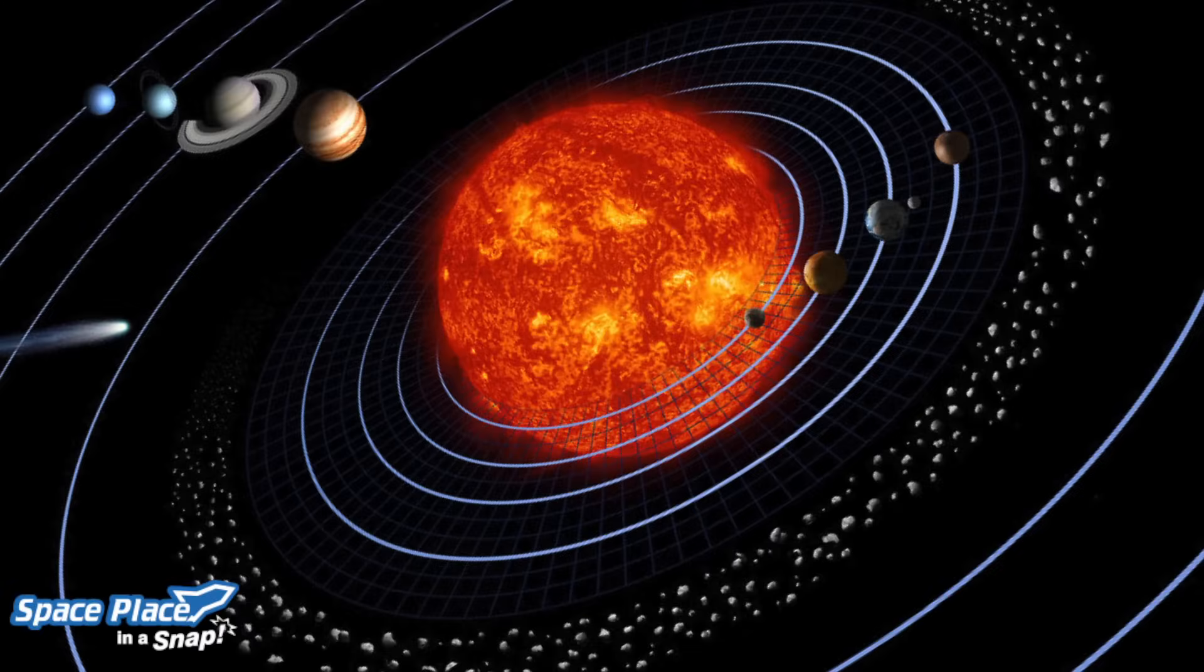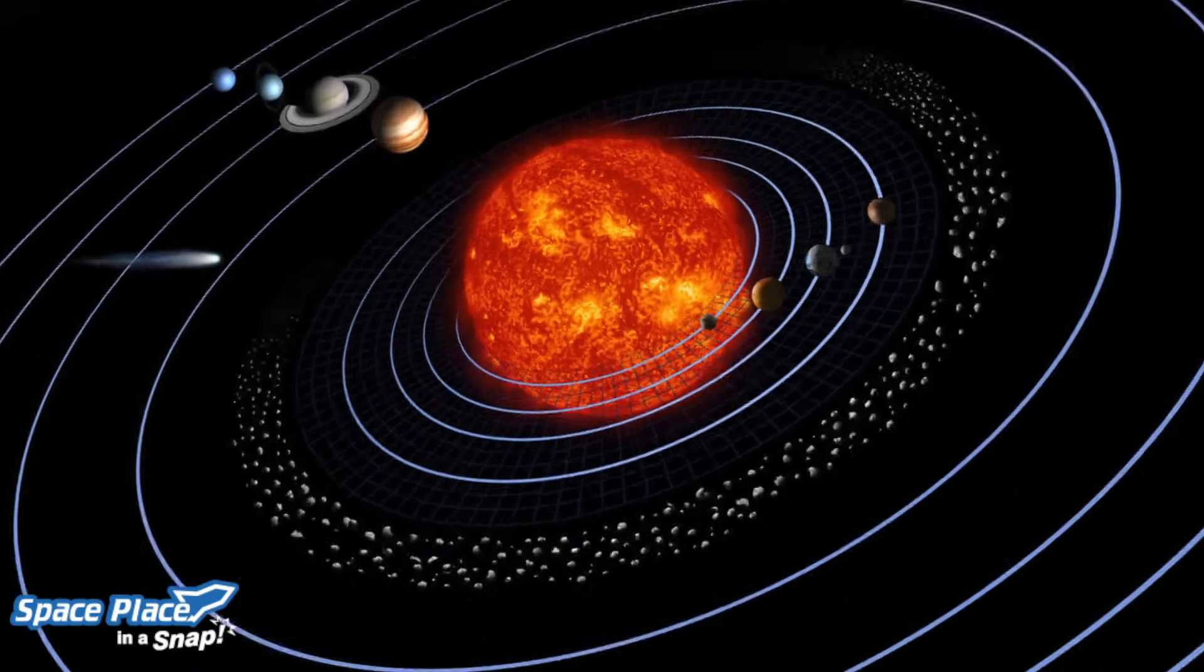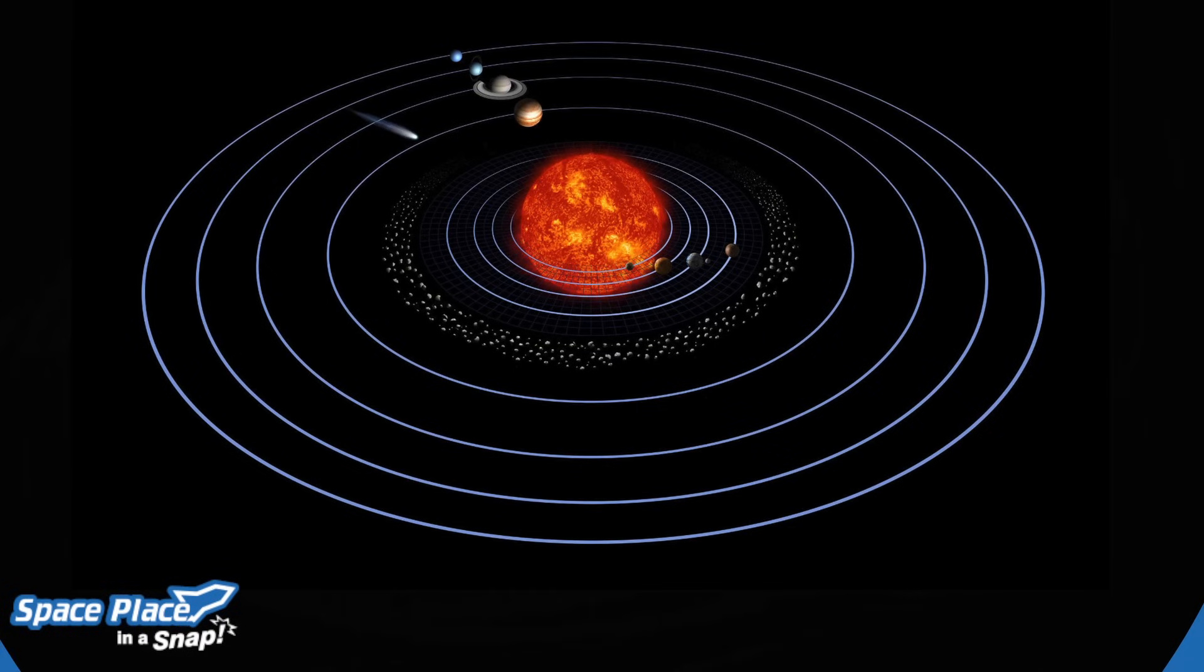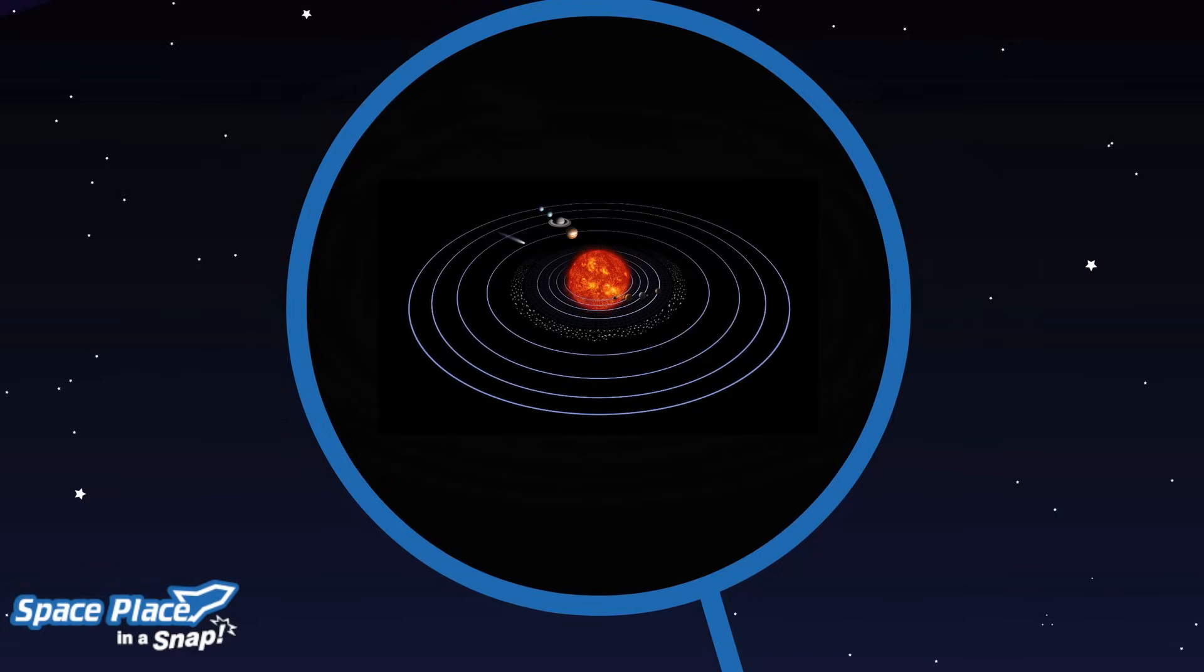The solar system is a pretty busy place. It's got all kinds of planets, moons, asteroids, and comets zipping around our sun. But how did this busy stellar neighborhood come to be?